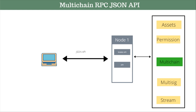Hello everyone, welcome to this session. In this section of the course, you will understand about JSON APIs for MultiChain. Till now, whatever operations you have performed — providing permissions to different addresses, creating your assets, creating your streams, transferring assets, mining steps — all were done using the CLI, which is your command prompt. Now you will learn how to access all those functions and commands using a JSON API, using a REST API basically.